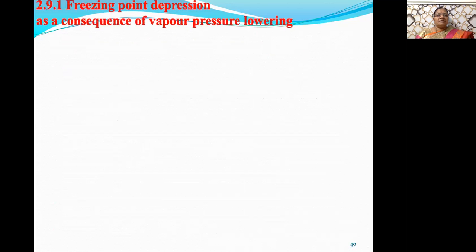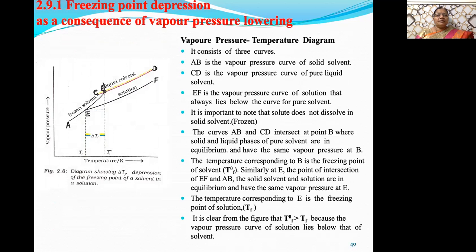Why is there a depression in freezing point? In the second colligative property — elevation in boiling point — the reason was that when solute is dissolved in a solvent to form the solution, the first thing that happens is vapor pressure lowering. Similarly here, as a consequence of vapor pressure lowering, the freezing point is decreased or depressed. So both elevation in boiling point and depression in freezing point are related to the first colligative property, that is vapor pressure lowering.